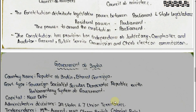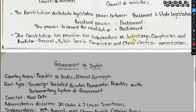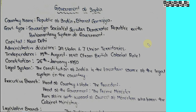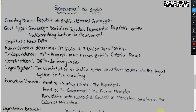The Constitution also provides for independence of the judiciary, the Comptroller and Auditor General, the Public Service Commission, and the Chief Election Commission.